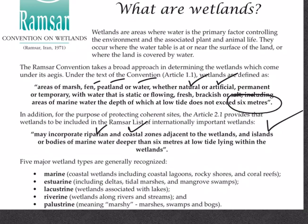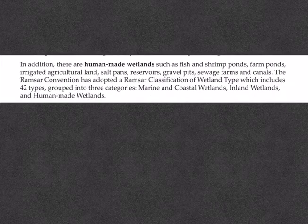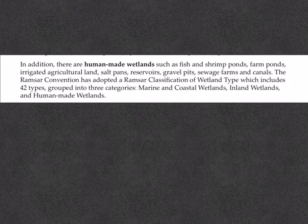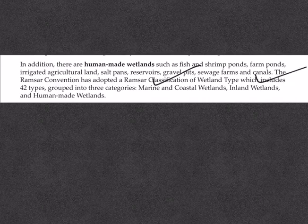As per the convention, there are five main types of wetlands: marine, estuarine, lacustrine, riverine, and palustrine. Artificial wetlands include human-made wetlands such as fish and shrimp ponds, farm ponds, irrigated agricultural land, salt pans, reservoirs, gravel pits, sewage farms, and canals. The Ramsar convention has adopted a classification of wetland types which includes 42 types grouped into three categories: marine and coastal wetlands, inland wetlands, and human-made wetlands.